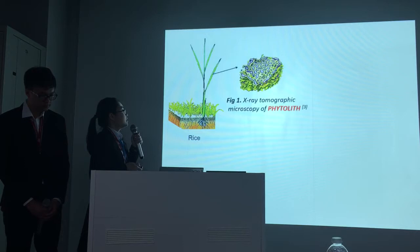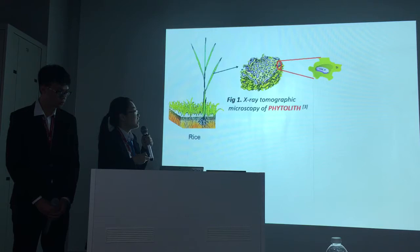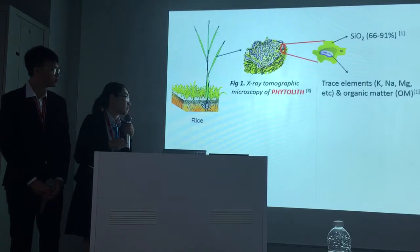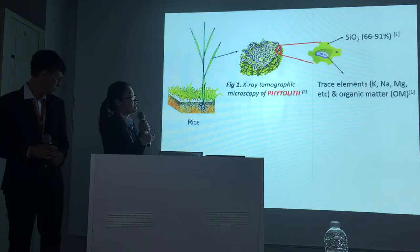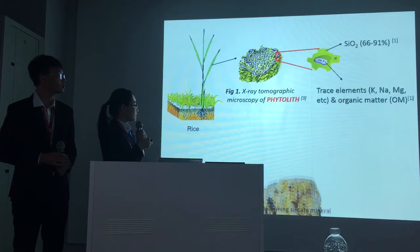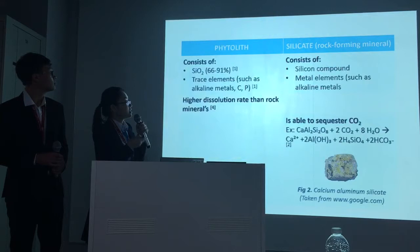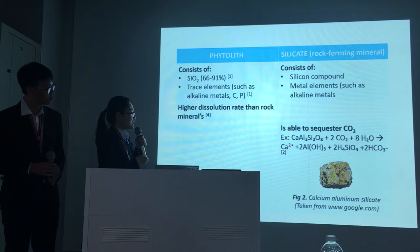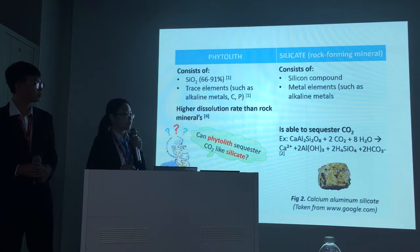This is the rice straw. The major component of rice straw is phytolith, which is a kind of silica. It covers a layer of silica and inside it are trace elements. Phytolith covers about 10–15% of the rice straw. When we notice the composition of phytolith, which contains silica and trace elements such as alkaline metals, we are reminded of the rock-forming silicate mineral, which also consists of silicon compounds and metal elements. We have known that silicate rock-forming mineral is able to sequester carbon dioxide by increasing the pH. So we pose a question: can phytolith also sequester carbon dioxide by silicate weathering?